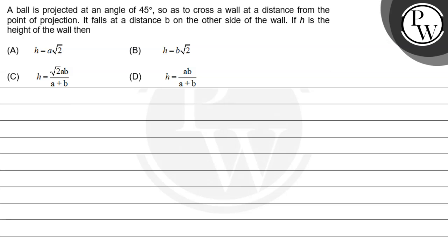Hello. Let's read the question. The question says that a ball is projected at an angle of 45 degrees so as to cross a wall at a distance A from the point of projection, and it falls at a distance B on the other side of the wall. If H is the height of the wall, then we have to find the height of the wall H in terms of A and B.